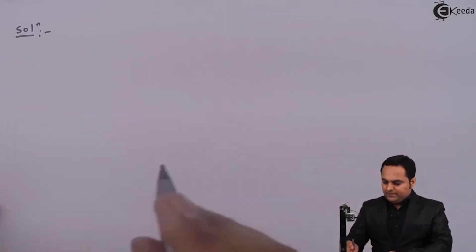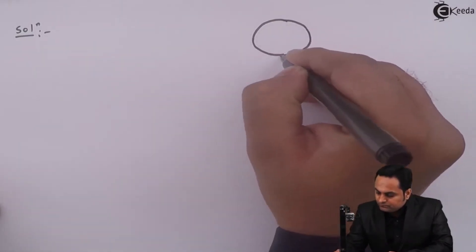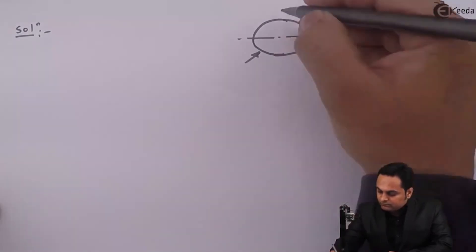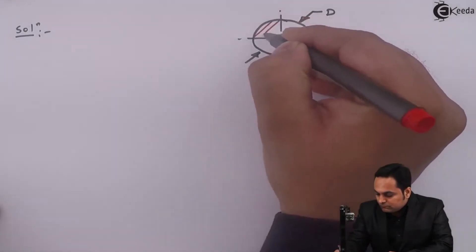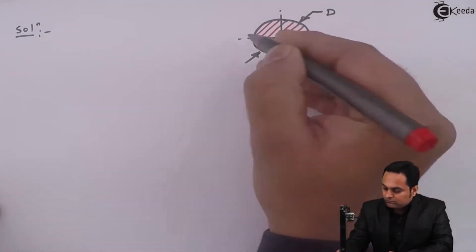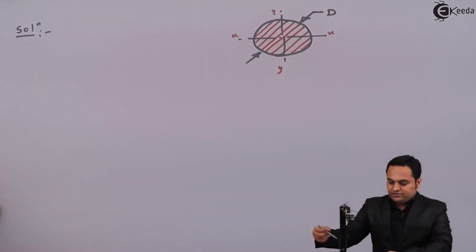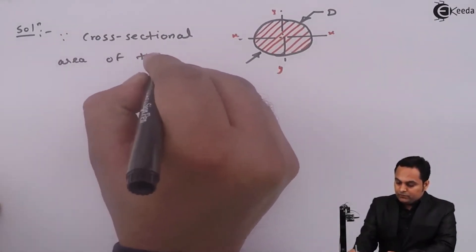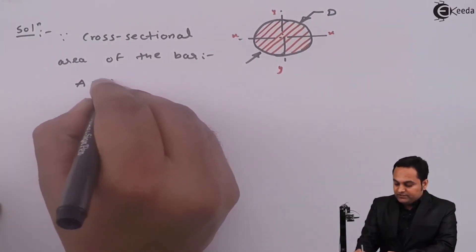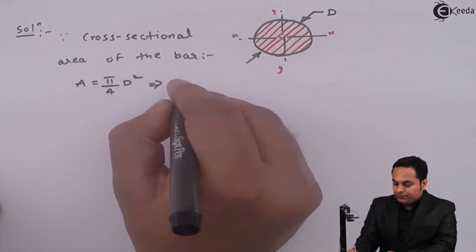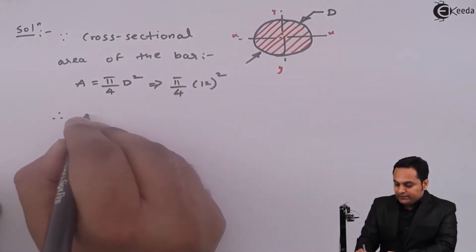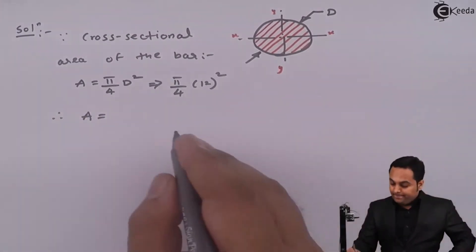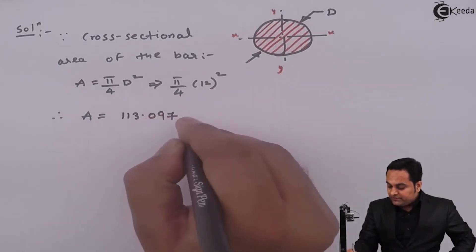Since the diameter of the bar is given, we can first get the cross-sectional area, which will be circular. The cross-sectional area A = π/4 × d² = π/4 × 12² and the area comes out to be 113.097 mm².